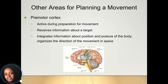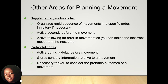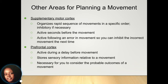The premotor cortex is also involved in your movement. It's active during the preparation for movement and helps receive the information that's targeted and helps the body integrate that information so the movement can take place. The supplementary motor cortex helps organize your sequence of movements so they go in a specific order, so you don't engage in the wrong movement at the wrong time. It's active for a few seconds before a movement and can help inhibit incorrect movements.